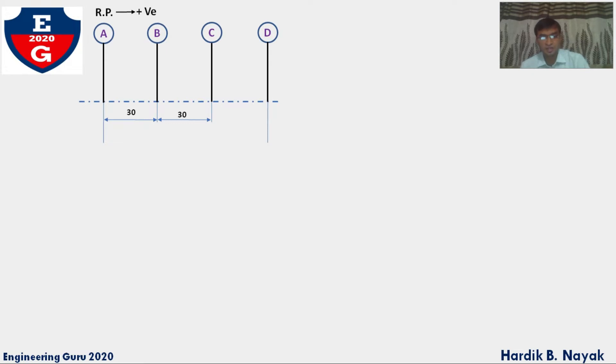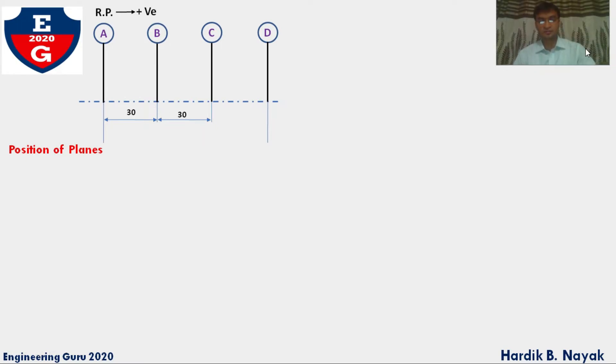We have four masses MA, MB, MC, and MD in their respective planes A, B, C, and D. Axial distance between A and B is 30 mm, B and C is 30 mm. This diagram is called position of planes. Now take reference plane on plane A. From the reference plane, right hand side any distance will be positive and left hand side will be negative if total length is not given.